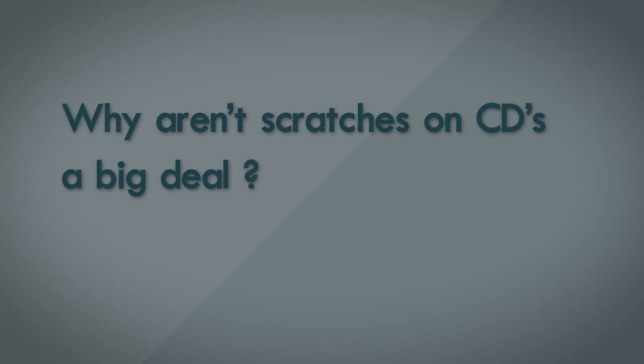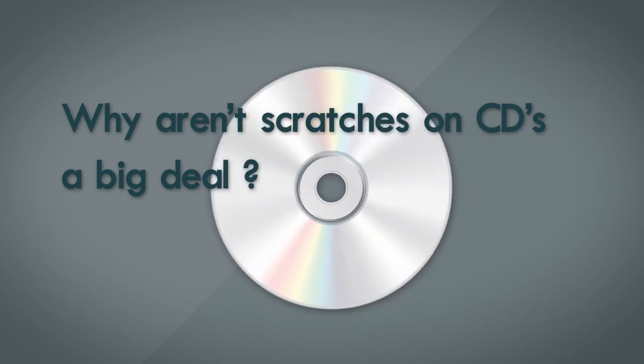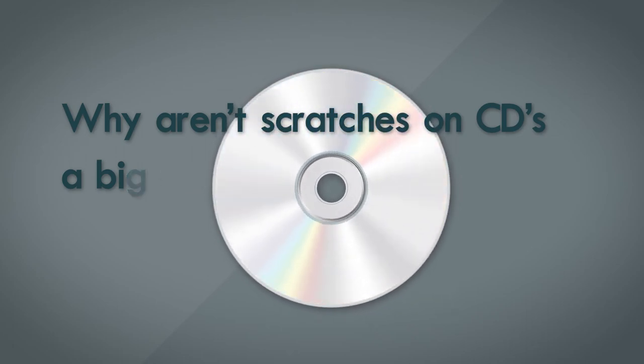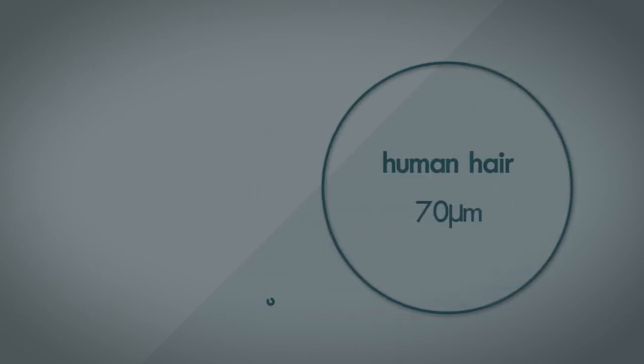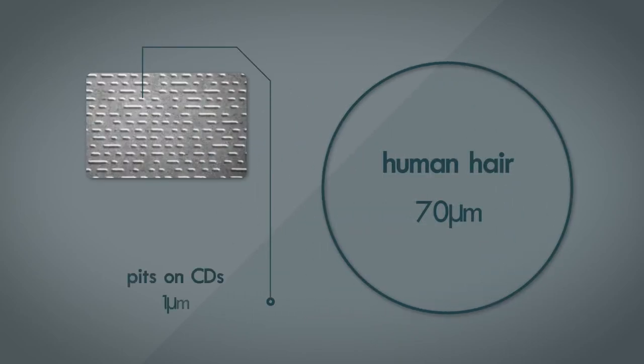Ever wondered how a scratchy CD can be played back, and still get almost seamless output, without any glitches or dropouts? If you look at the scale of the problem, it's even more astonishing. The average width of a human hair is around 70 micrometers. In comparison, the width of the pits that are etched into the surface of the CD are around 1 micrometer. So a single scratch could potentially wipe out hundreds to thousands of bits of data.